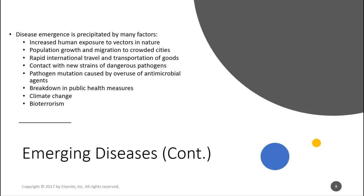Disease emergence is precipitated by many factors: an increase in human exposure to vectors in nature, population growth and migration in crowded cities, rapid international travel and transportation of goods, contact with new strains and dangerous pathogens, pathogen mutation caused by overuse of antimicrobial agents, breakdown in public health measures, climate change, and bioterrorism. Those are all factors that affect diseases and how we're exposed.